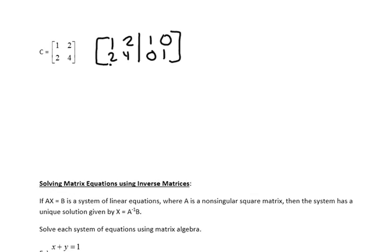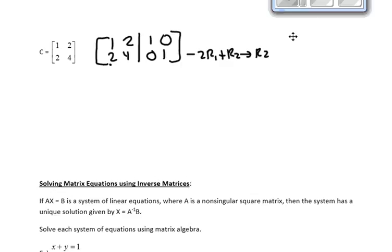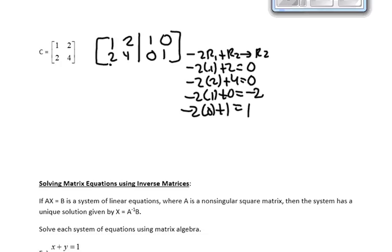Now I want to do row operations to get it to look like RREF. I'm going to take negative 2 times row 1 plus row 2 as a new row 2. I want this 2 here to be a 0. Doing the row operations, we get this.